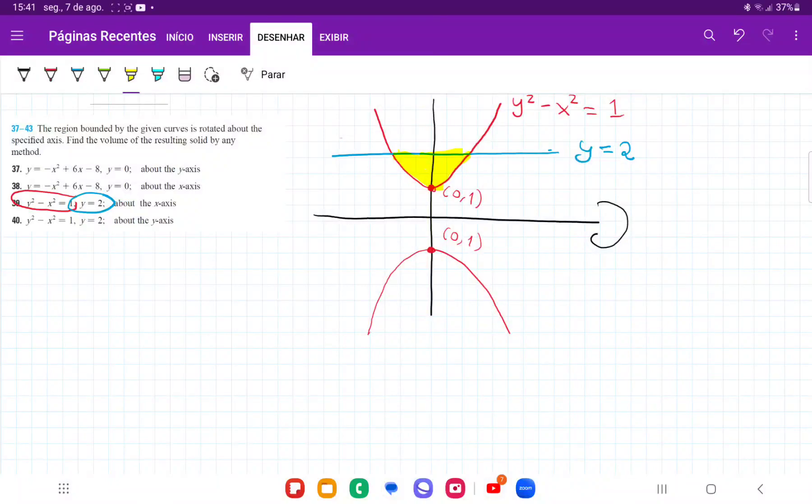So for number 39, we want to rotate the area bounded between these two curves about the x-axis. I've gone ahead and drawn them. The red curve is a hyperbola, a little bit different than what we're used to working with, and the blue curve is just y equals 2.